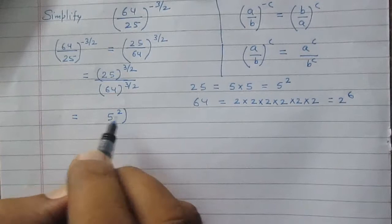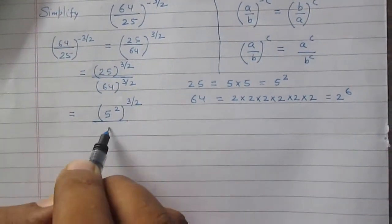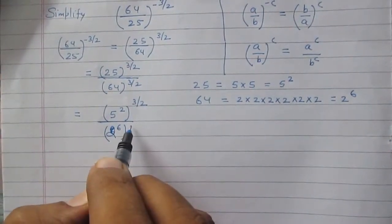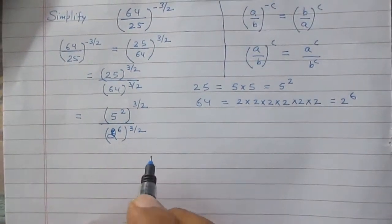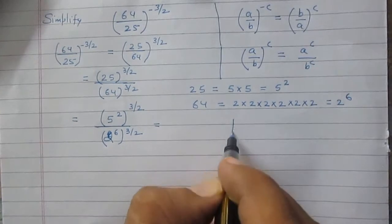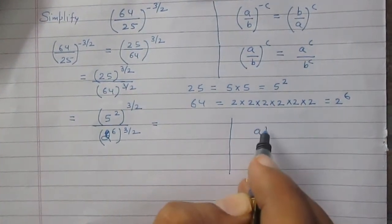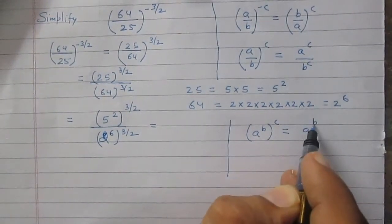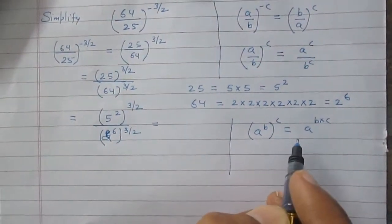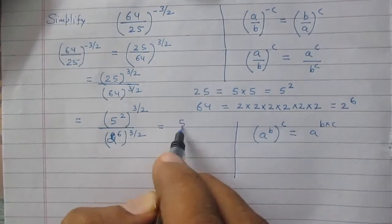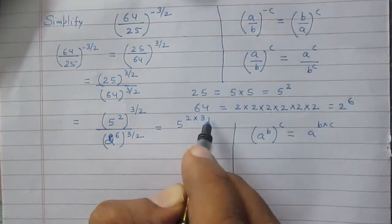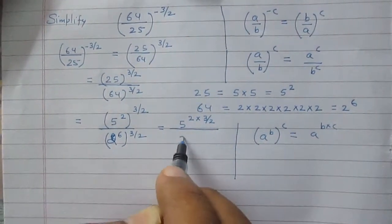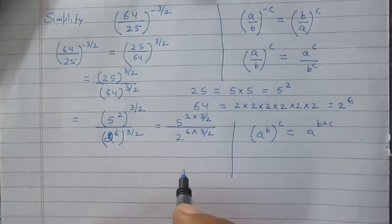We have 5 raised to power 2, whole raised to power 3 by 2, divided by 2 raised to power 6, whole raised to power 3 by 2. According to the laws of exponents, a raised to power b, whole raised to power c, equals a raised to power b multiplied by c. So the numerator becomes 5 raised to power 2 multiplied by 3 by 2, and the denominator is 2 raised to power 6 multiplied by 3 by 2.